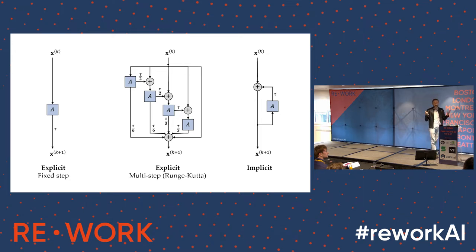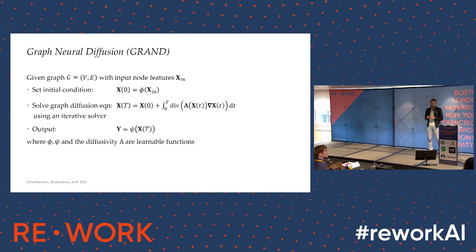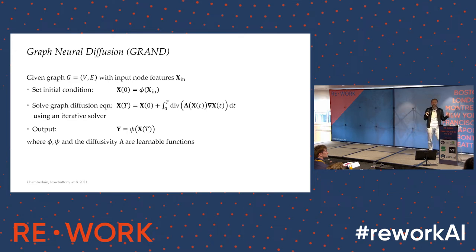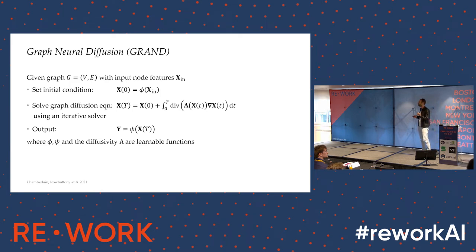Of course, there are many different numerical schemes in the literature — semi-implicit, multi-step, and multi-grid schemes. You can think of parameterizing the diffusivity function as the learnable parameters of your architecture. You start with initial features on the graph, diffuse them by this parametric diffusion, and read out the results as the output of your neural network.